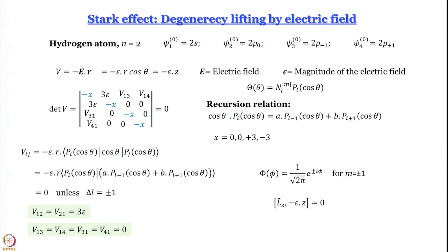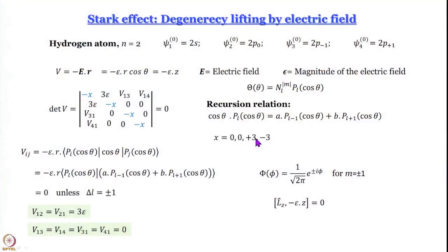With this analysis established, the secular determinant reduces to a simple form. Solving gives x equal to 0, 0, plus 3epsilon, and minus 3epsilon. Here x is the first-order correction to energy. If x equals zero, there is no change in energy. So two of the four orbitals do not change in energy, one is stabilized, and one is destabilized. The orbital whose angular momentum is aligned with the electric field gets stabilized.